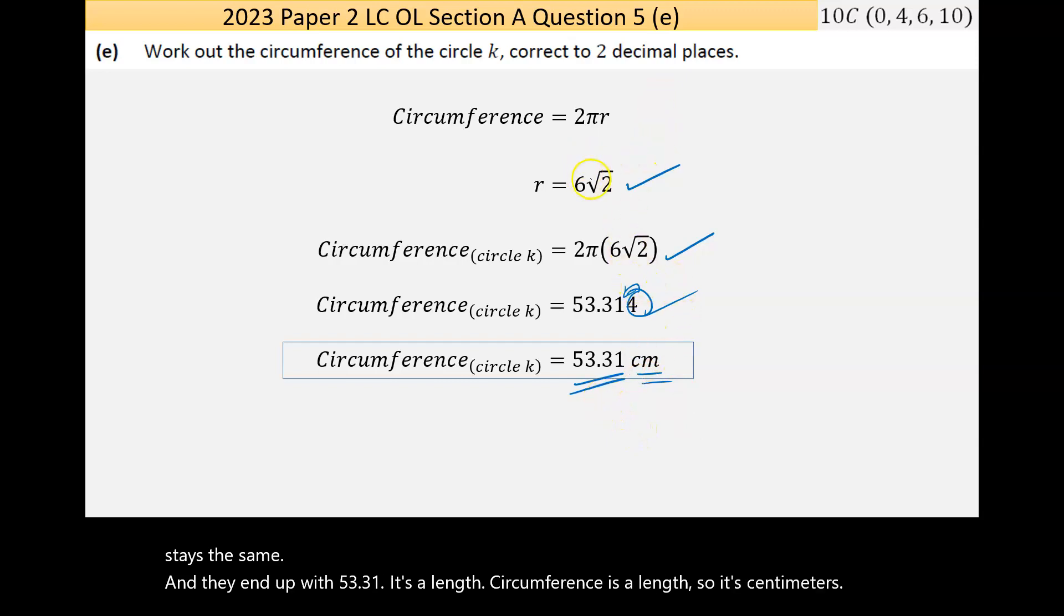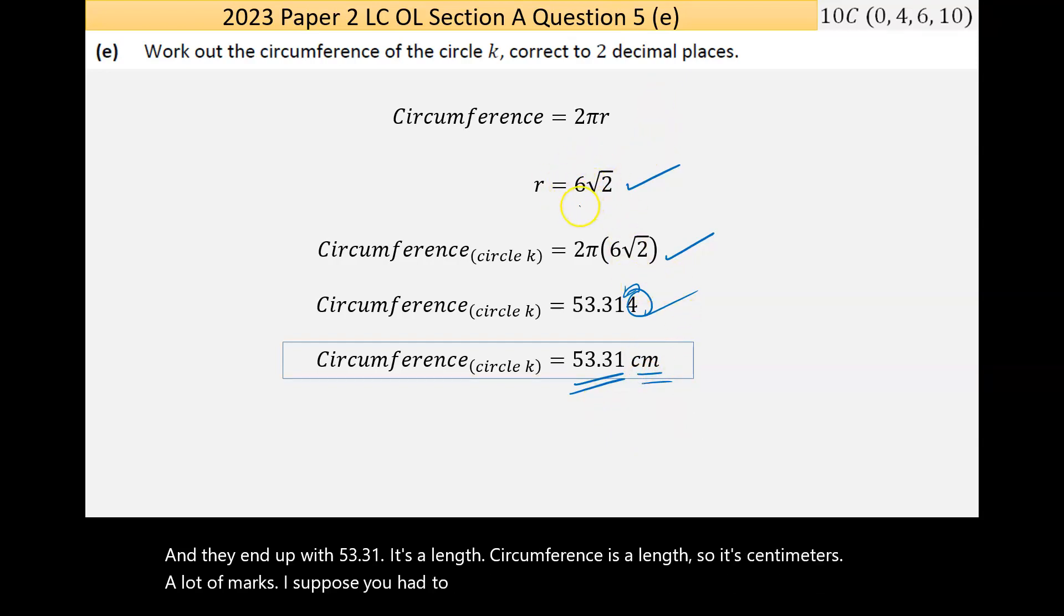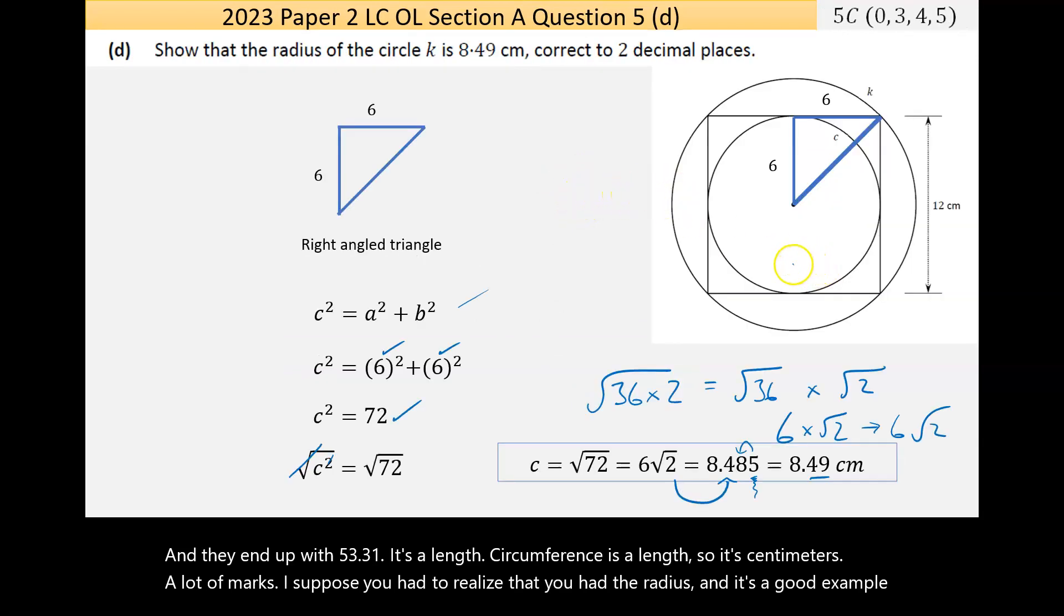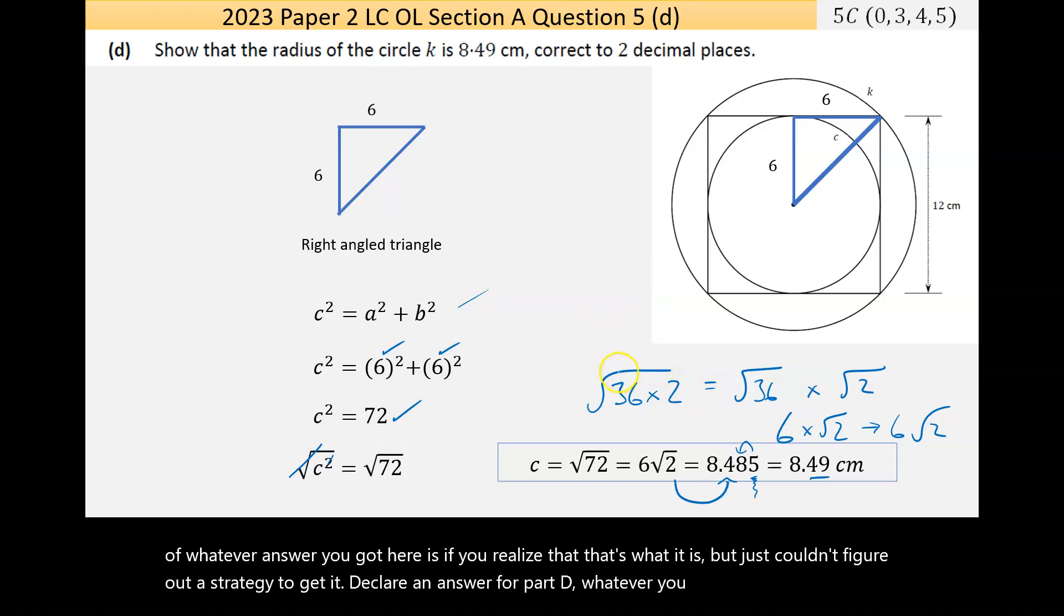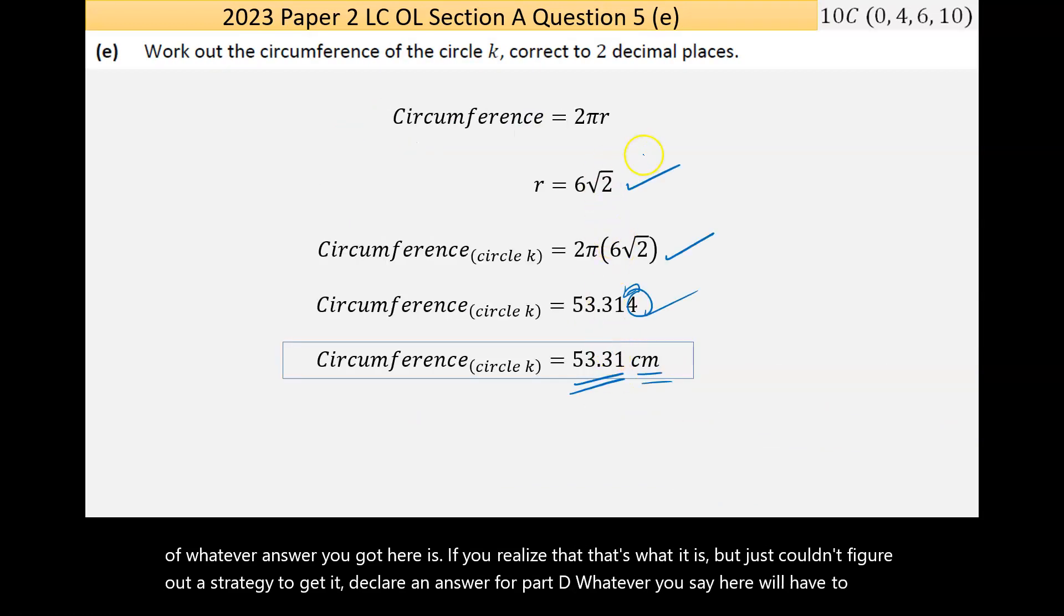It's a lot of marks. I suppose you had to realize that you had the radius, and it's a good example of whatever answer you got here—if you realize that that's what it is but just couldn't figure out a strategy to get it—declare an answer for part D. Whatever you say here will have to be accepted as fully correct in part E.